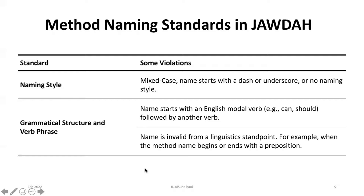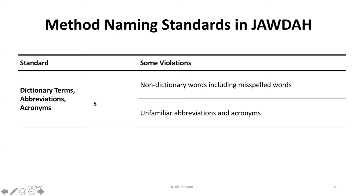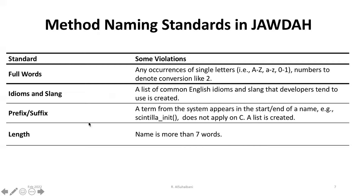The table here shows some of the violations for each of the 10 method naming standards. For example, some violations for the naming style standard include if the method name starts with a dash or underscore, which is reported as a violation implemented in the approach. The same applies for dictionary terms, abbreviations, and acronyms.